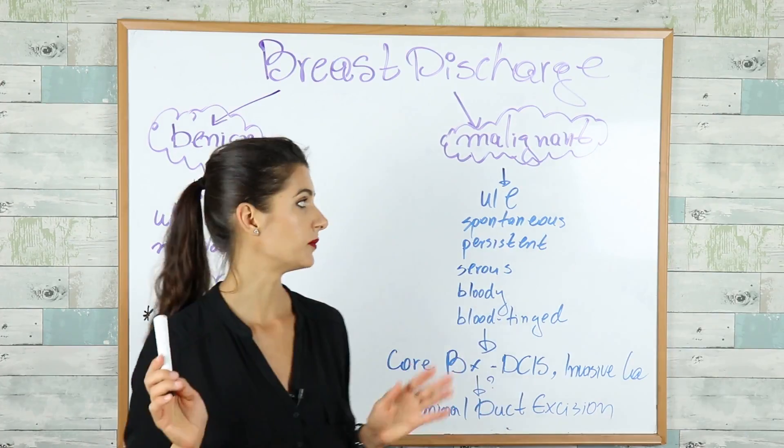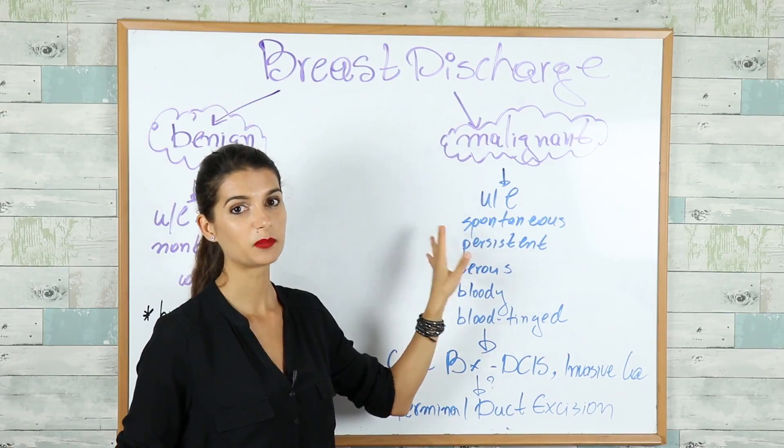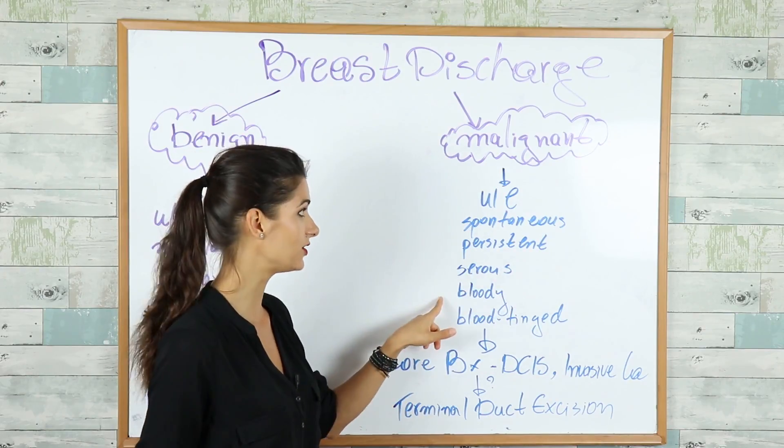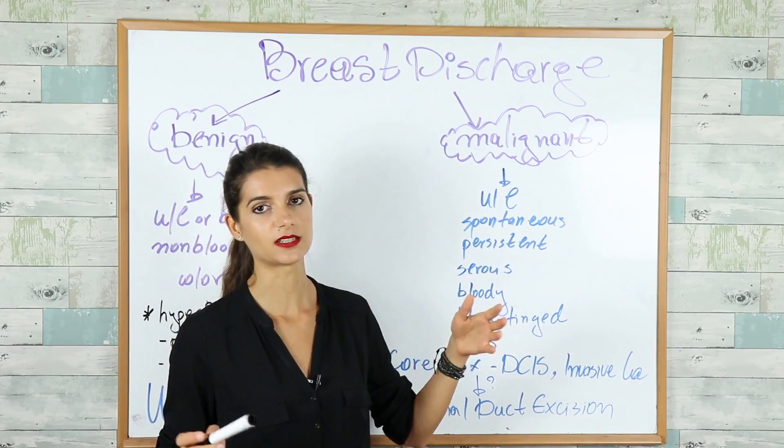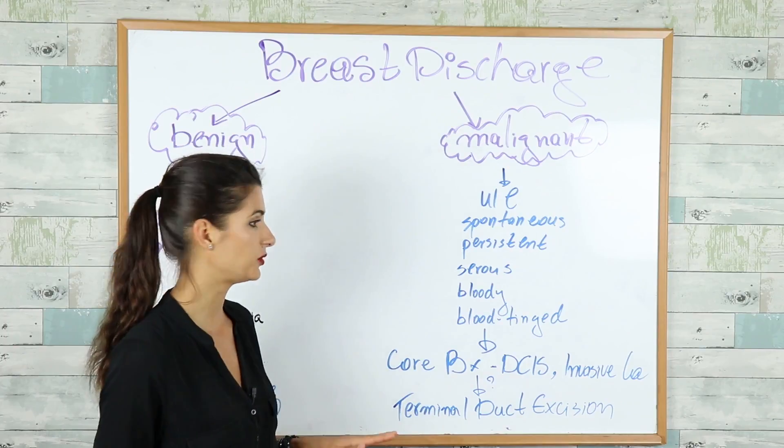But if you find a breast discharge described as unilateral, spontaneous, persistent, bloody or serous or blood-tinged, then you have to start suspecting a malignant lesion in that woman.